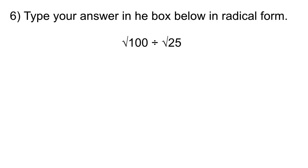Now this is going to be very easy because we already determined these square roots. We know that the square root of 100 is 10, and the square root of 25 is 5. So 10 divided by 5 equals 2.